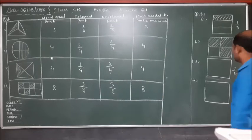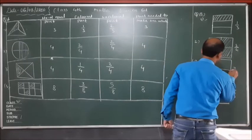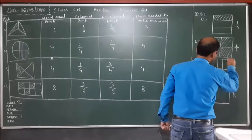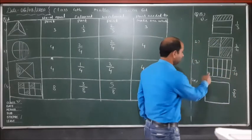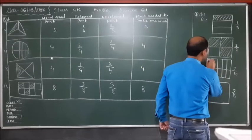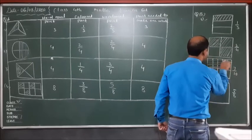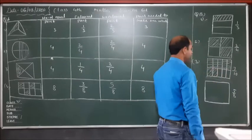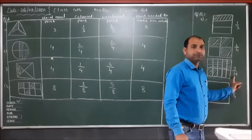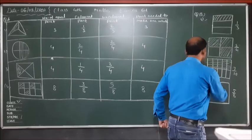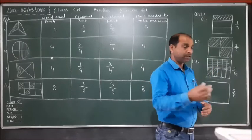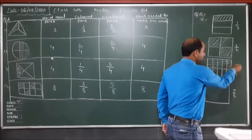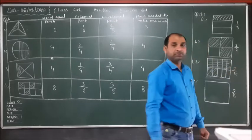For seven upon ten: we divide into ten parts — one, two, three, four, five, six, seven, eight, nine, ten parts. We color seven parts. So the whole is divided into ten parts and seven parts are colored, giving us seven upon ten.